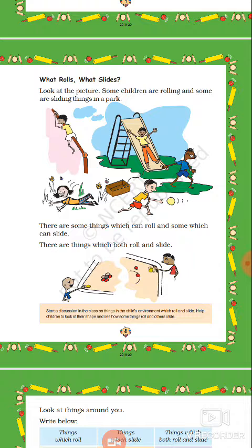You can see this picture, and in this picture you can see so many children are playing. There is a boy who is sliding over a pipe. There is another boy who is sliding from the slide. A boy is sliding a box. Another boy is rolling a ball. A girl is rolling on the ground. Two kids are playing carom board, and they are sliding the pieces on the carom board.